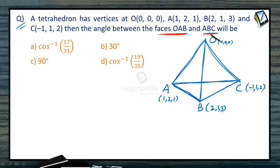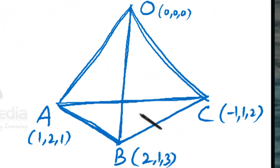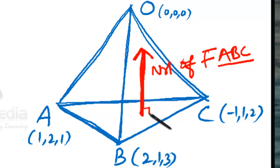Now the angle between the faces is nothing but the angle between their normals. The normal of this face is this one. This is the normal of face ABC. Let us take the normal of this face, which is perpendicular. So this is the normal of face OAB.